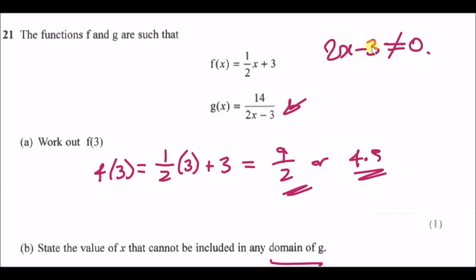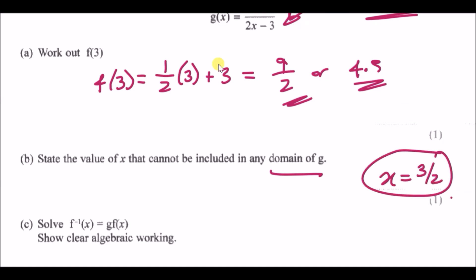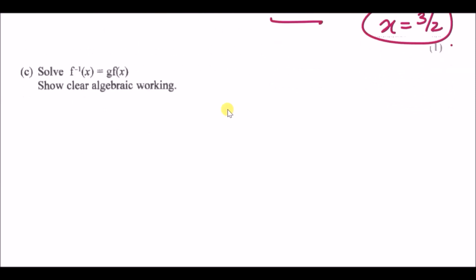We just solve this and make x the subject — add 3 and divide by 2. So x technically cannot equal 3 over 2. Every other value of x works, so the value we cannot include is x = 3/2.